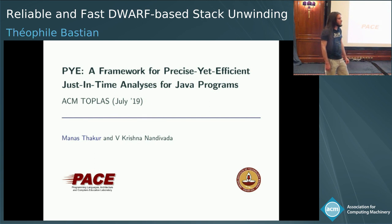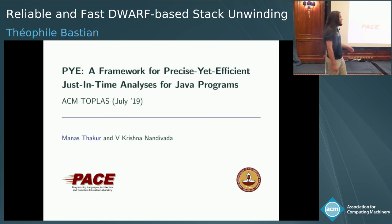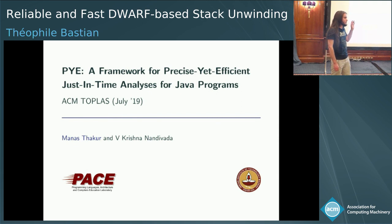[Q] Is DWARF documented somewhere? [A] Yes, it's totally documented — it's even an open standard. You can look up the PDF. It's a roughly 300-page document for the whole format because it's so complicated. To be entirely fair, it doesn't only cover unwinding — there is a lot of other debugging data in there. Everything that GCC generates with -g is in DWARF as well, so those 300 pages are not for unwinding only.